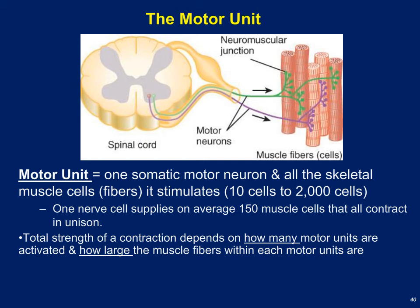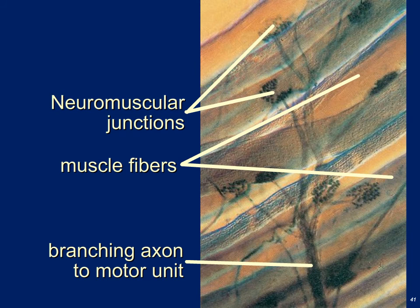The total strength of muscular contraction depends on how many motor units we are calling up — a process called recruitment — and also on how large the muscle fibers are within each motor unit. Here we see an axon of an individual motor neuron that branches and has several different extensions going to several different muscle fibers. The place where one of these extensions meets the muscle fiber is called the neuromuscular junction. At each neuromuscular junction, the neuron releases neurotransmitter, resulting in the electrical charge and eventually the contraction of the skeletal muscle fibers.